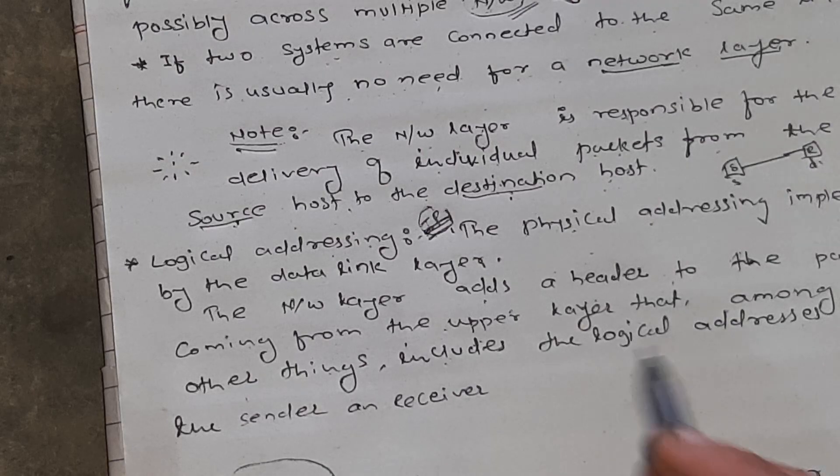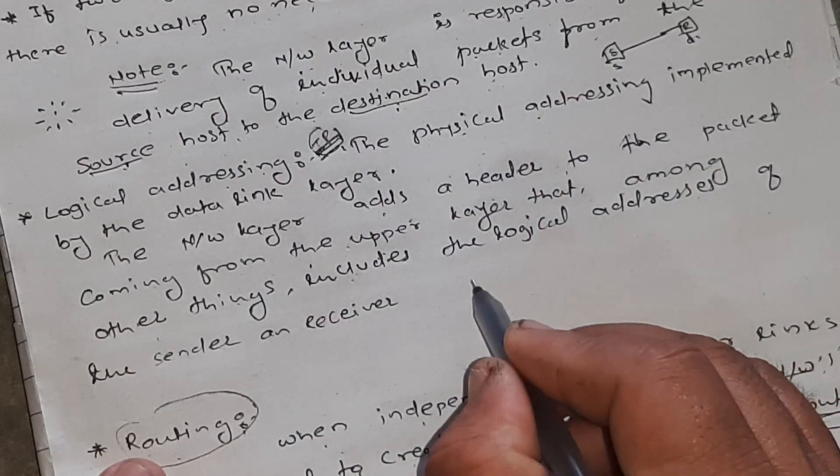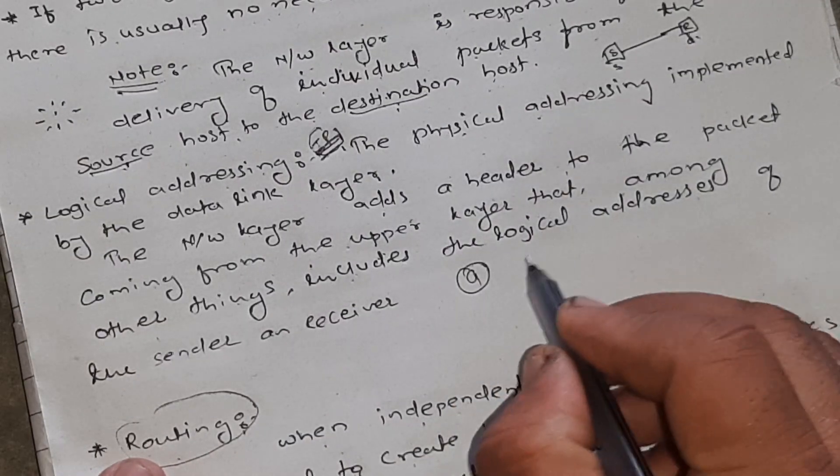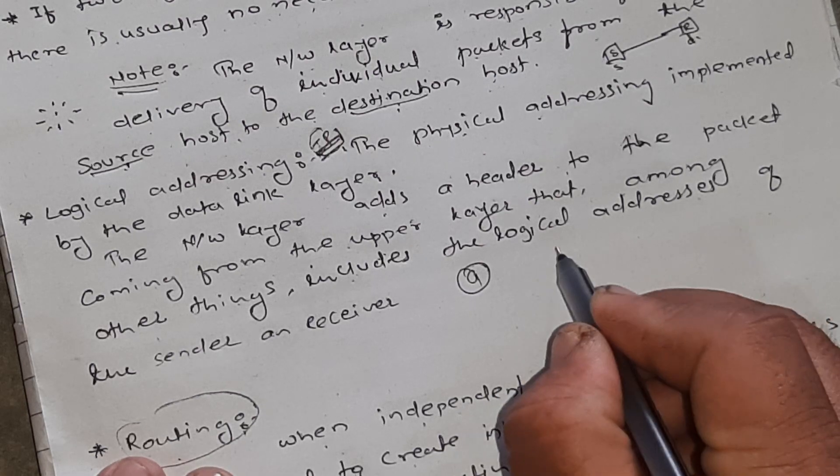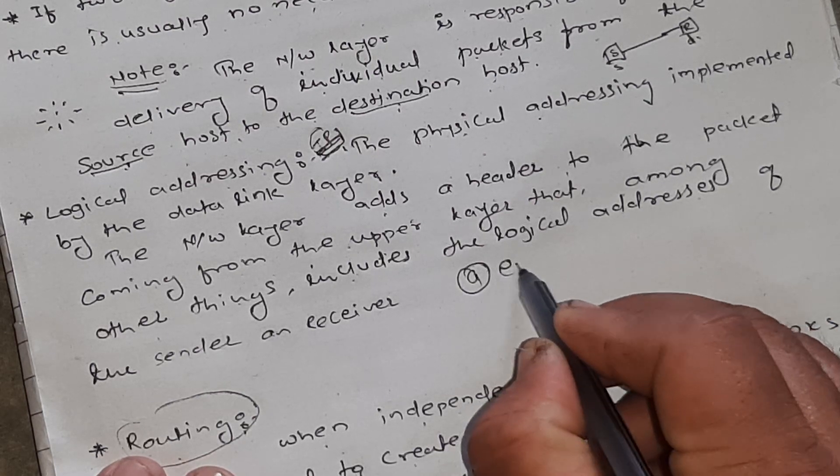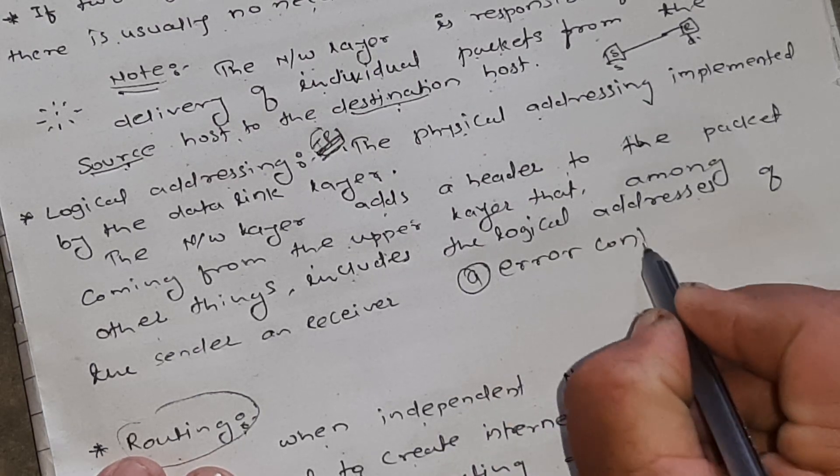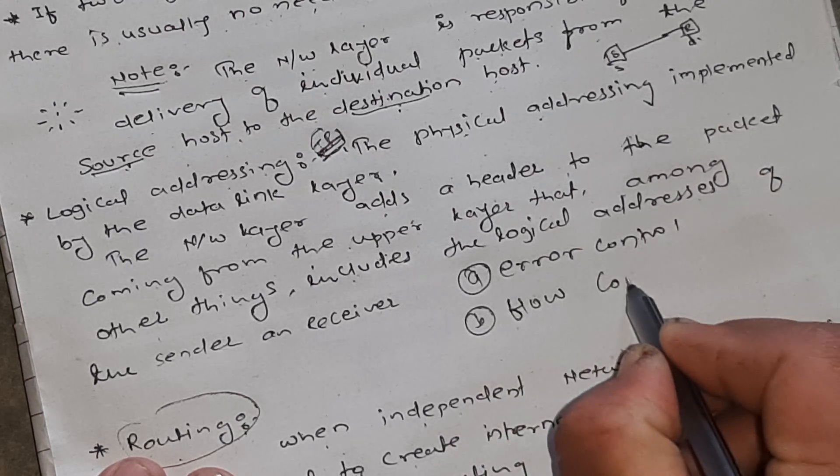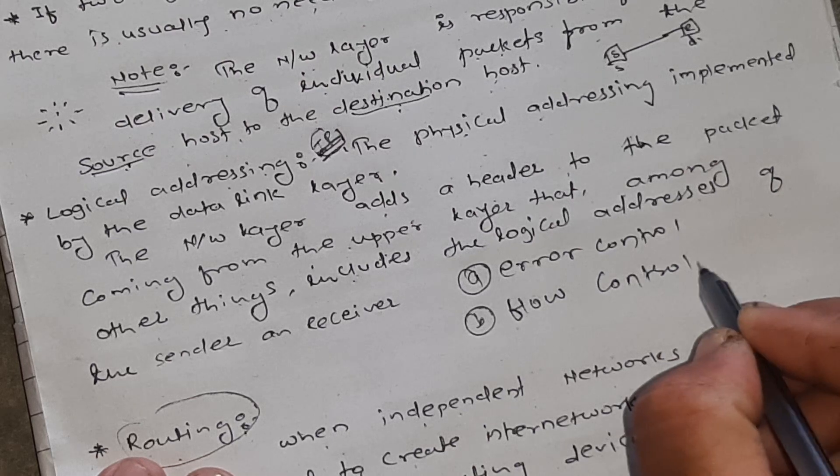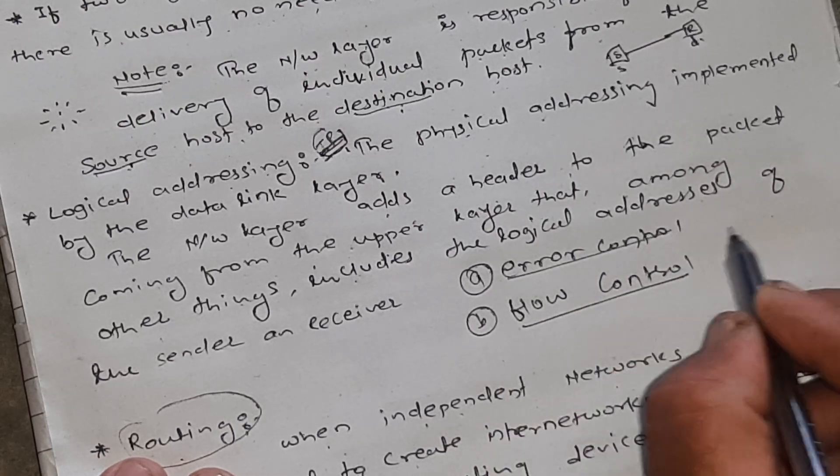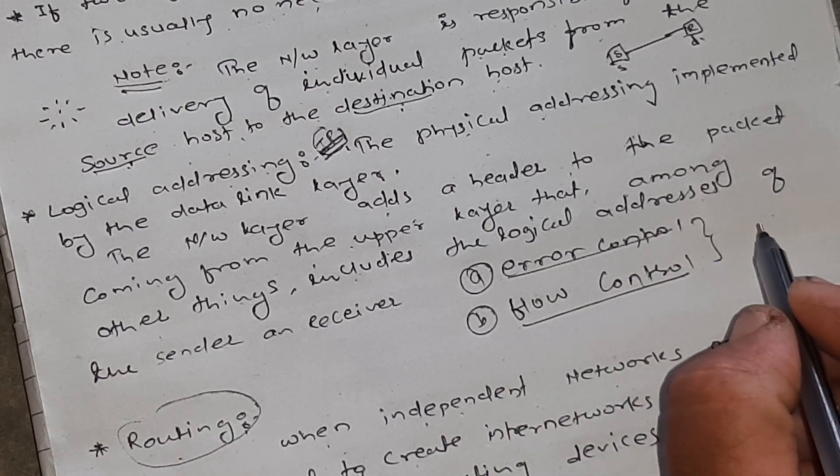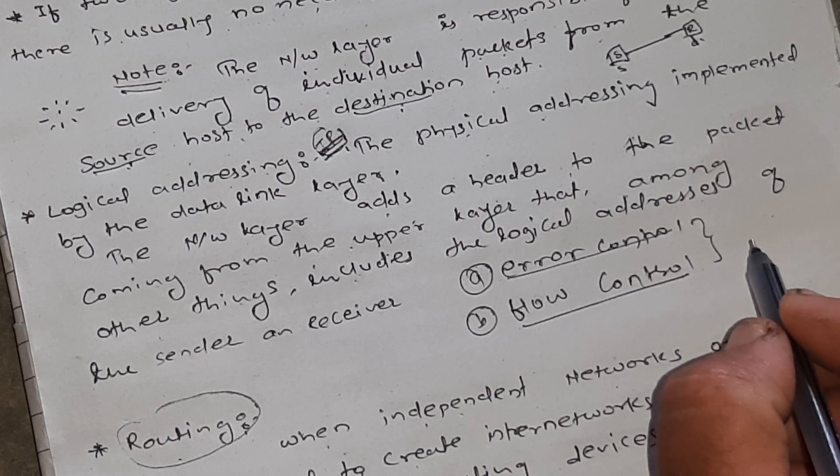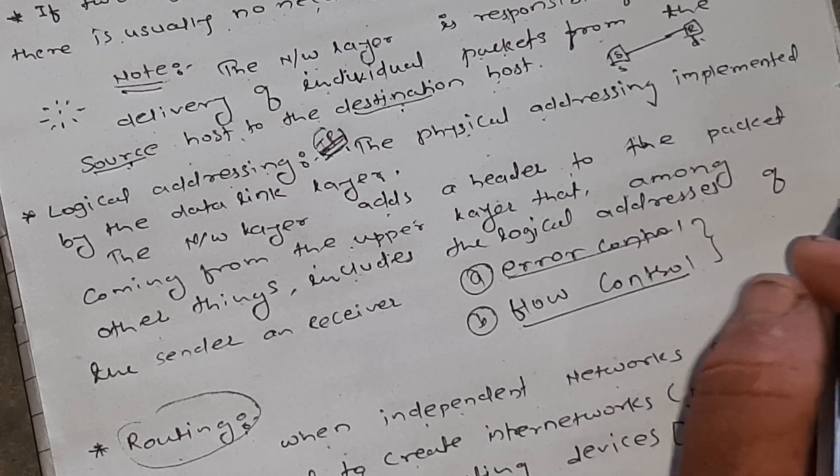Here, in the network layer, two things are also done similarly as done in the data link layer. Here, that is error control and flow control. Okay, these things are also done in the network layer, but using several protocols that we will see in our next lecture.